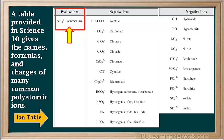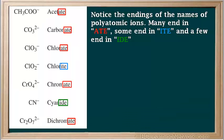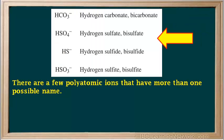The only positive polyatomic ion on this table is the ammonium ion on the very left at the top. The rest are negative ions or anions, and they are in alphabetical order by name. Notice the endings of the names of polyatomic ions. Many end in "-ate", some end in "-ite", and a few end in "-ide". We must be very careful with these endings when we're looking for and using these ions. Also notice there are a few polyatomic ions that have more than one possible name, with a comma between the two names.